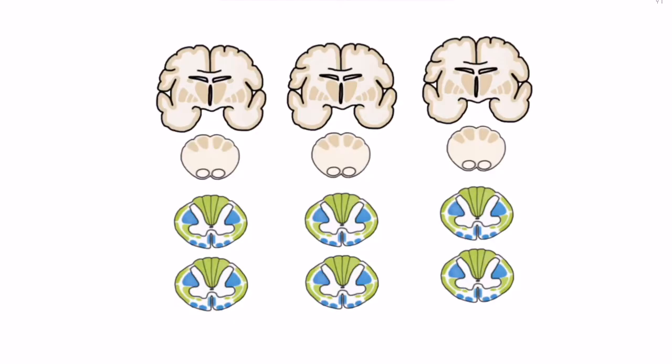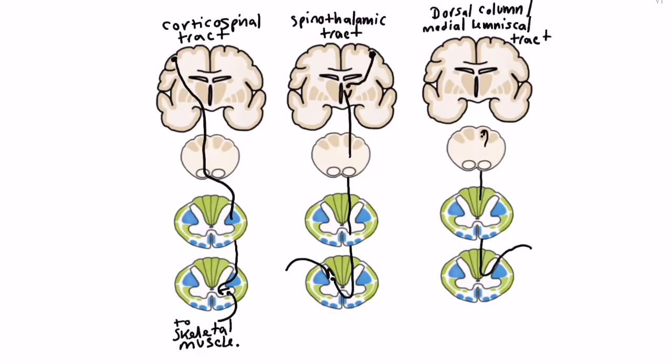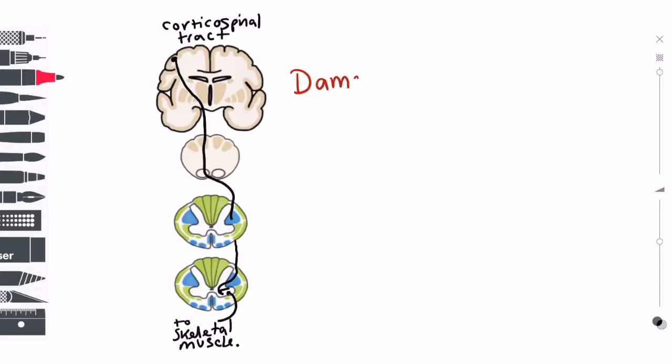Clinically important tracts that run through the brainstem include the corticospinal tract which is a motor pathway and the spinothalamic and dorsal column tracts which are sensory pathways. Damage to the corticospinal tract will result in weakness or paralysis of particular muscles.